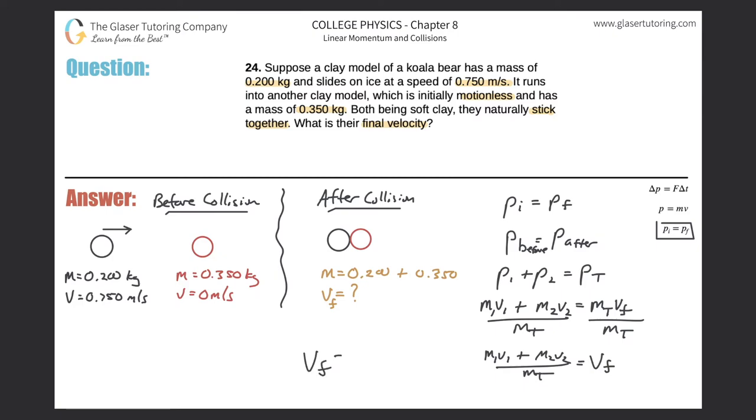So the final velocity here will be equal to the mass and the velocity of the first object. We'll call that the black one. So this is point, let me give myself actually a little more room. I got so much room here. Not used to that, right? These problems usually take up an entire page. Point two zero zero multiplied then by the velocity of point seven five zero plus then the mass of the second object times its velocity of point three five zero multiplied by zero all over then the total mass, which we basically found over here.